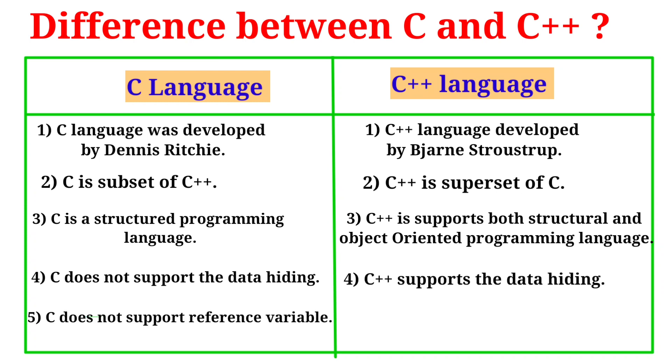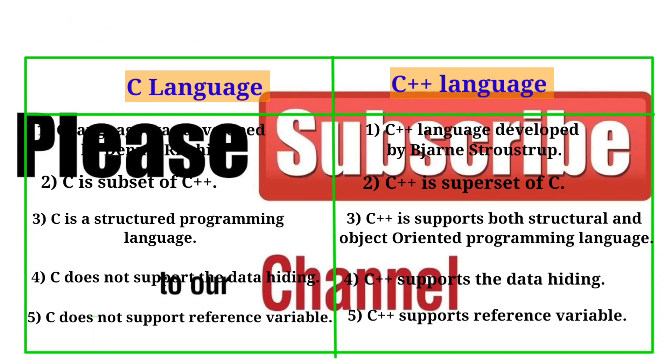C does not support reference variables, whereas C++ supports reference variables.